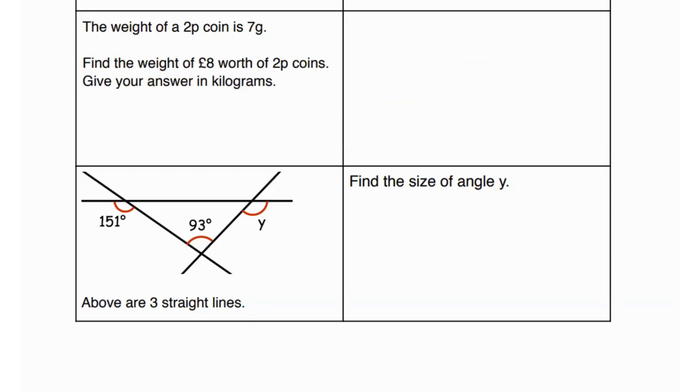We have three straight lines and they're asking us to find the size of angle y. Let's begin with finding this angle first. Since this angle and 151 are on a straight line, they are supplementary angles. Supplementary angles always add up to 180 degrees, which means 180 equals 151 plus y. So y would be 180 minus 151, and that gives us 29 degrees.